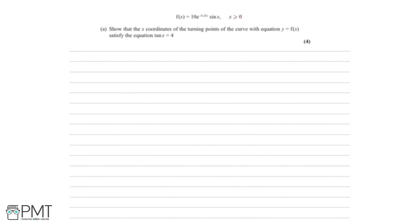So firstly, just look at part a. We are given that f(x) equals 10 multiplied by e to the power of minus 0.25x, multiplied by sin(x), and we know that x is greater than or equal to 0. Part a says we need to show that the x-coordinates of the turning points of the curve y = f(x) satisfy the equation tan(x) = 4, and this is for 4 marks.